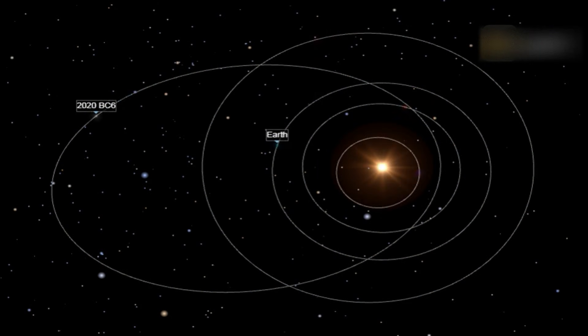These are usually defined as having a minimum orbital intersection distance with the Earth less than 0.05 astronomical units, corresponding to 19.5 times the distance of the Moon, and an absolute magnitude of 22 or greater, approximately corresponding to 140 meters.